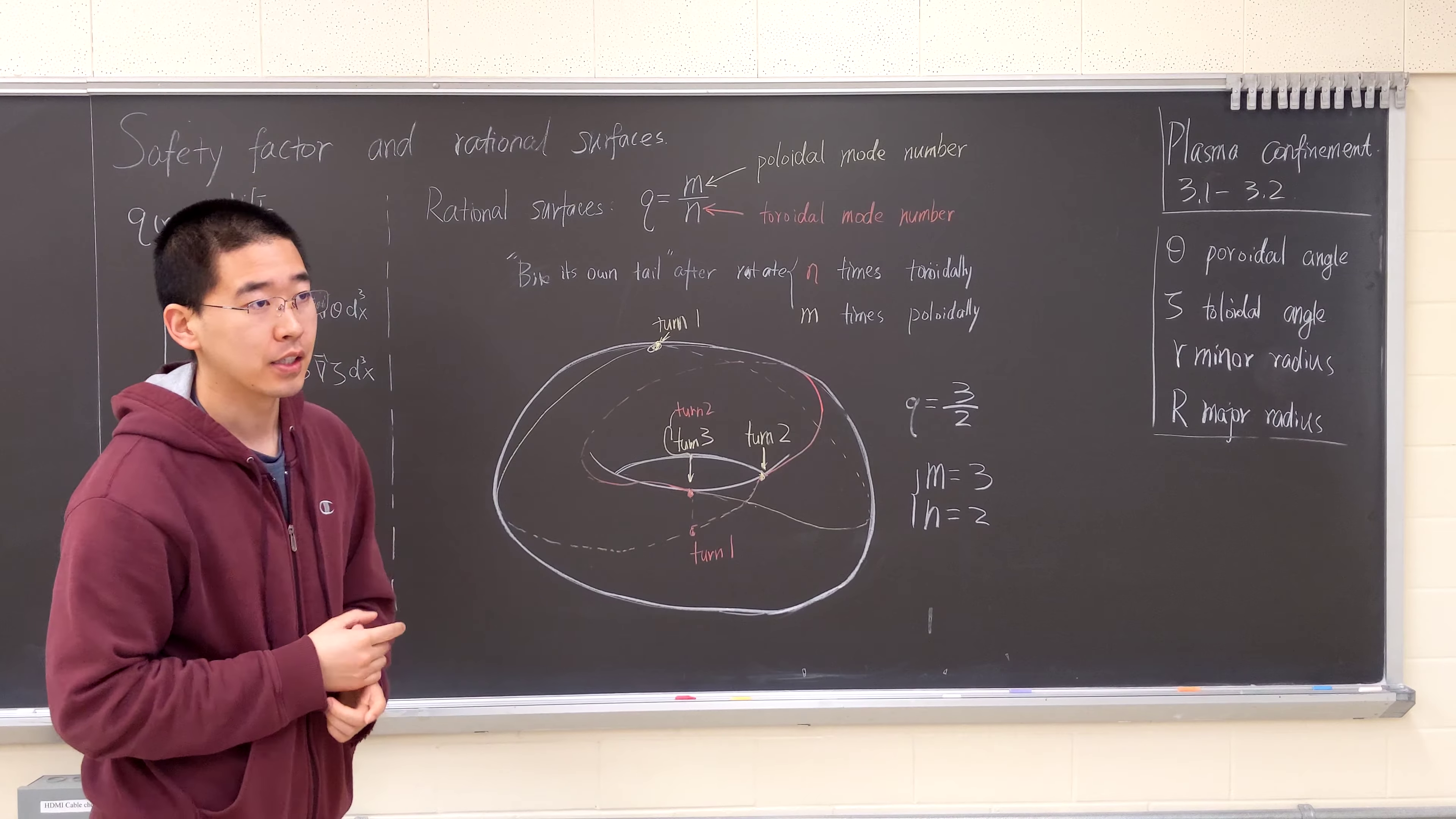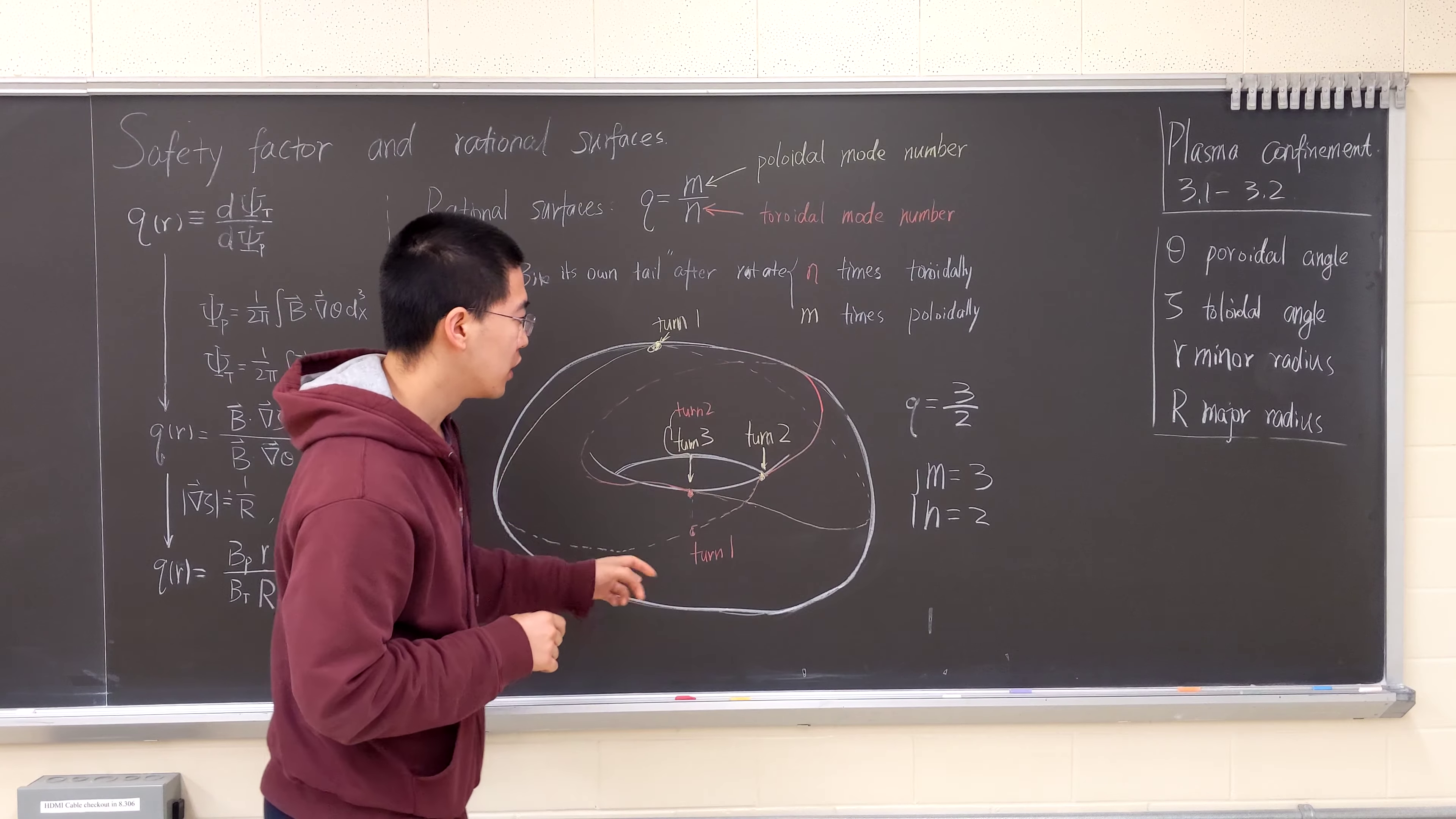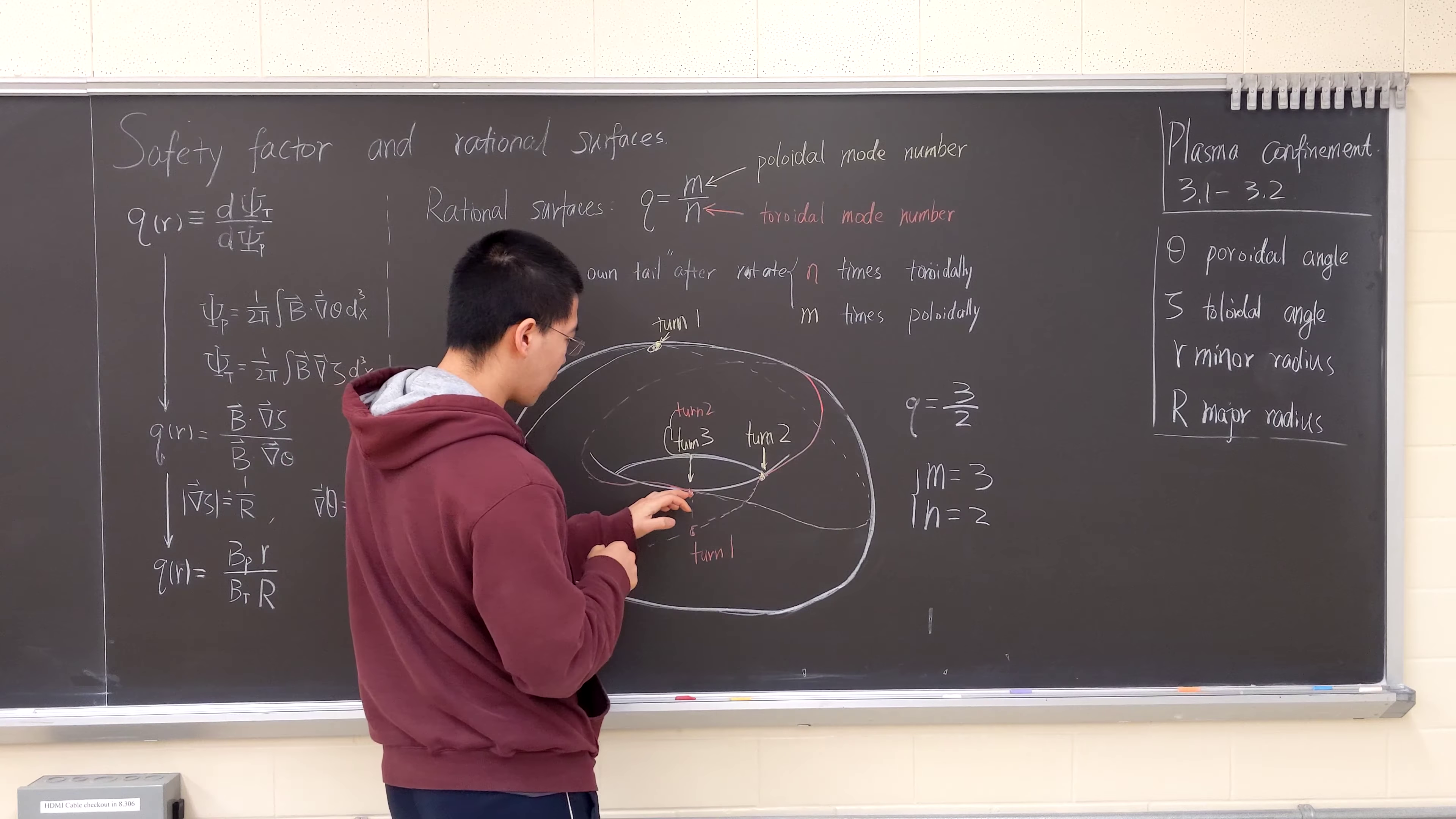If you trace along the magnetic field line, then it rotates n times toroidally and m times poloidally. So let's look at this. Let's look at this plot I drew. I hope you can understand it. So let's start from here.